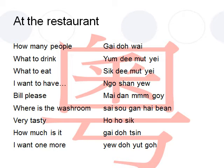飲啲乜嘢. 飲 means drink, and 乜嘢 means something. So what to drink in Cantonese is called 飲啲乜嘢. What to eat is similar to what to drink, and that is 食啲乜嘢. So what to eat in Cantonese is called 食啲乜嘢.